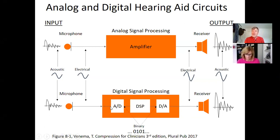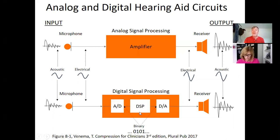Now you have an A-to-D converter — analog to digital — changing electricity into digits. At the center is DSP: digital signal processing, where the digits are manipulated and all the math is done. It's all binary: zero, one, zero, one — combinations. With math you can manipulate the formula and digits any which way you choose.